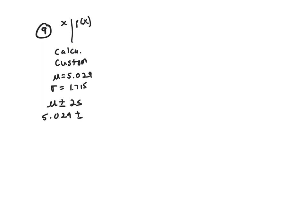Of course, minus will be your minimum and your maximum will be the plus one. Two times 1.715. And that gave me 1.6 up to 8.5. And that's using the range rule.